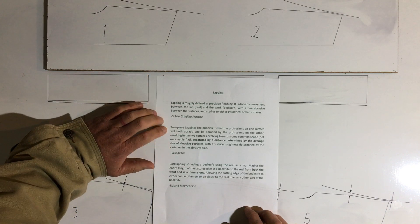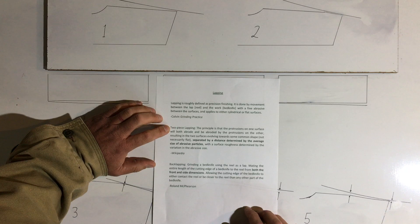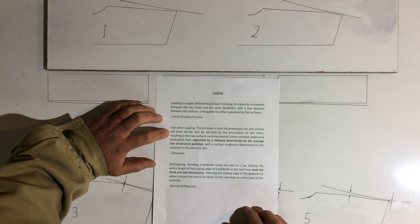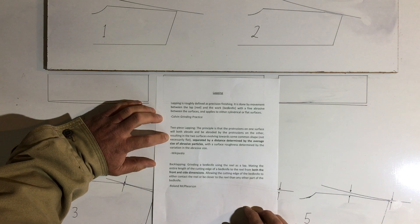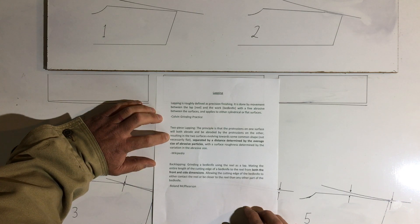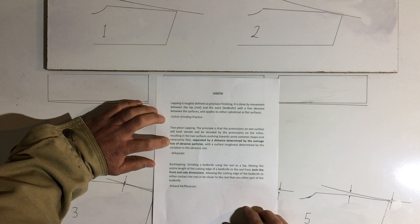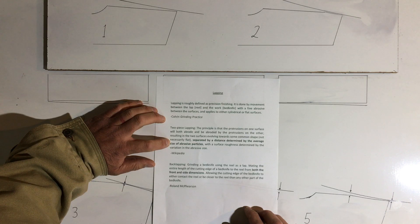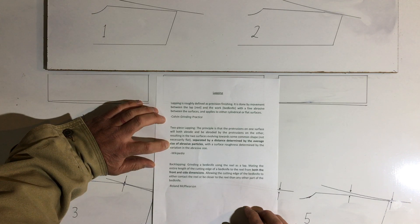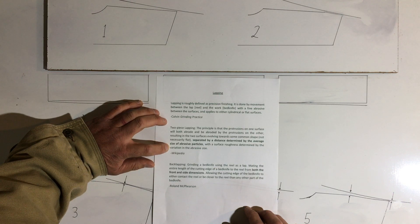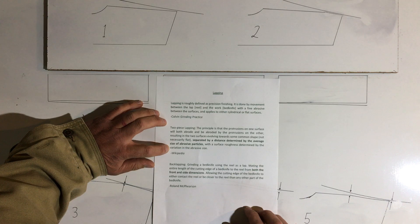And from Wikipedia, their definition of two-piece lapping is the principle that the protrusions on one surface will both abrade and be abraded by the protrusions on the other, resulting in the two surfaces evolving towards some common shape, not necessarily flat, separated by a distance determined by the average size of abrasive particles, with a surface roughness determined by the variation in the abrasive size.